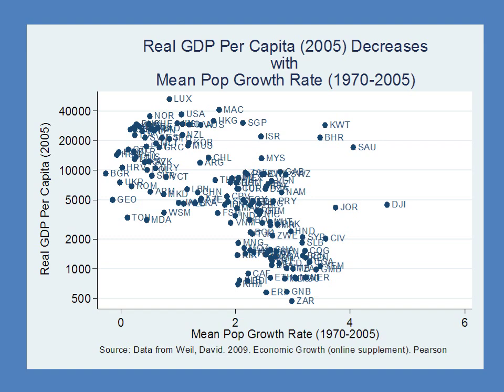Here we're showing the mean population growth rate over the previous 35 years against real GDP per capita on the vertical axis. As the Solow model predicts, we see a negative relationship between the population growth rate and real GDP per capita. The causality doesn't necessarily all run from population growth to income — perhaps poor countries have more children because that's one of the only ways to save for retirement. Nevertheless, the prediction is consistent with the Solow model.